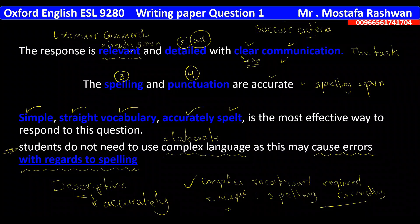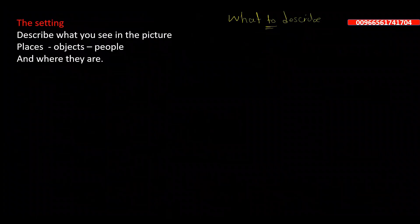In this question you are assessed on: the relevance of your ideas — describing what you actually see in the picture; giving a detailed description; having clear communication; accurate spelling and punctuation; and vocabulary that need not be highly advanced, though using advanced vocabulary correctly is better. Accuracy in spelling and punctuation is what matters most.